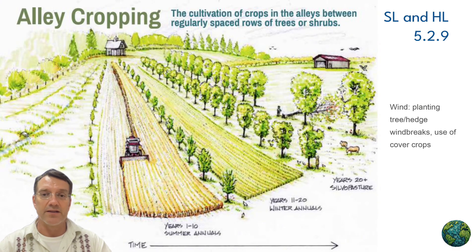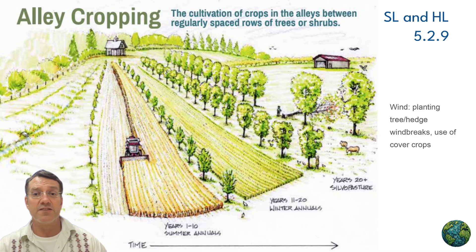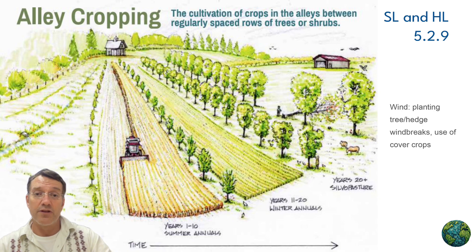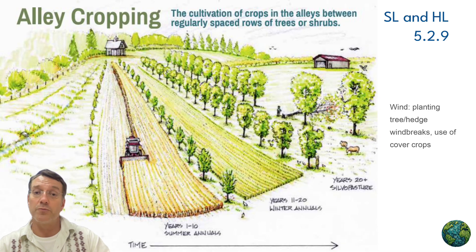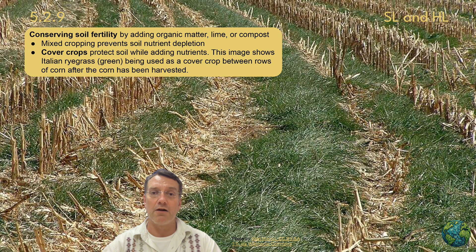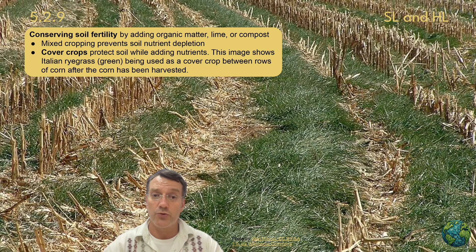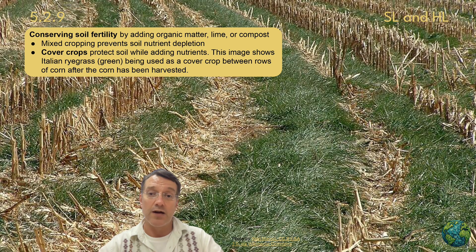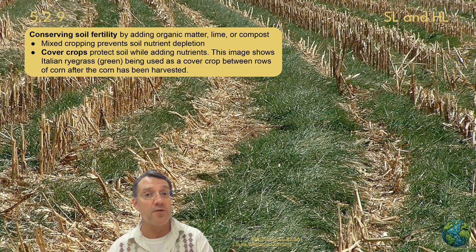This diagram shows alley cropping, where crops are cultivated in alleys between regularly spaced rows of trees or shrubs. The trees act as windbreaks, which reduces wind erosion, and the tree roots help hold the soil in place. Trees can also provide additional income through timber or fruit and create beneficial microclimates for crops. This picture shows Italian ryegrass being used as a cover crop between rows of corn after the corn has been harvested. Cover crops protect soil from erosion while adding nutrients and organic matter. Mixed cropping, where different crops are grown together, prevents soil nutrient depletion by using complementary plants with different nutrient needs.